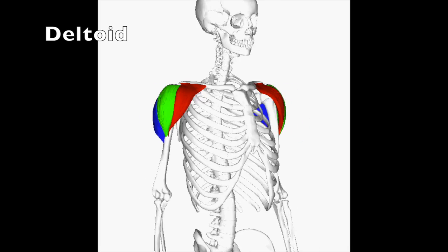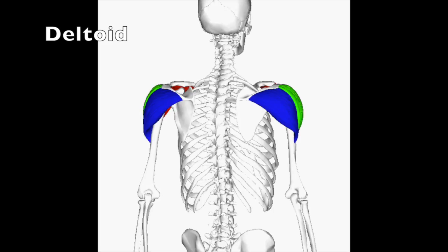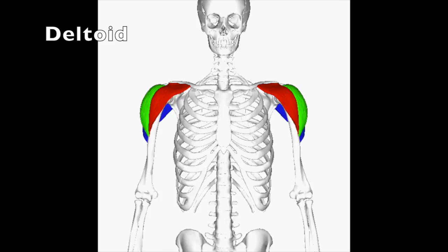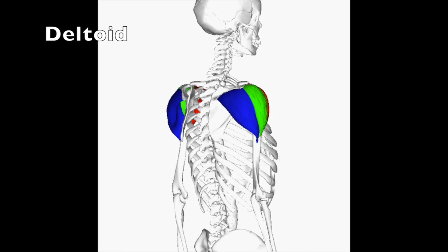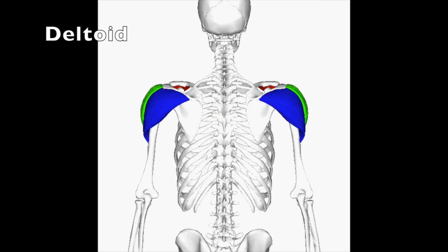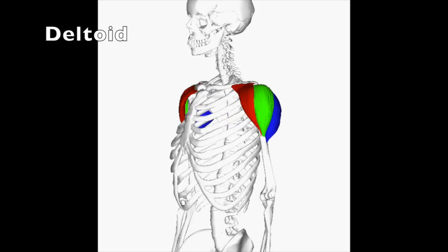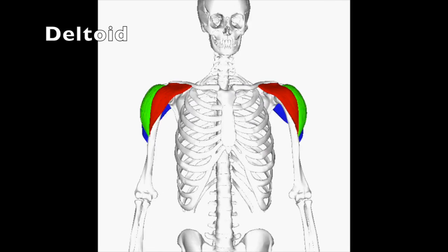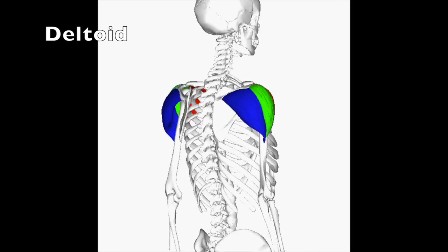The three portions of the deltoid muscle are shown here in different colors. The lateral portion abducts the arm. The anterior portion flexes the shoulder. And the posterior portion extends the shoulder.